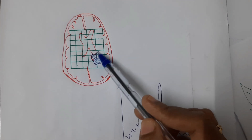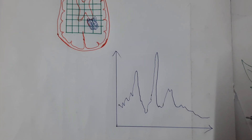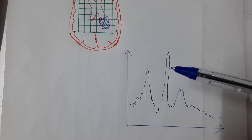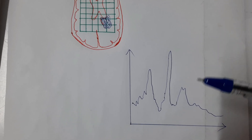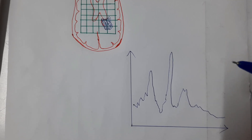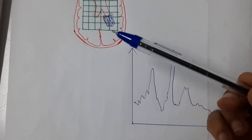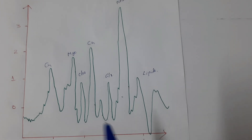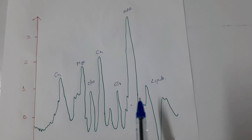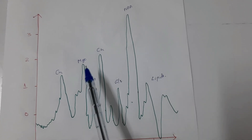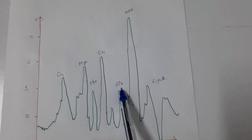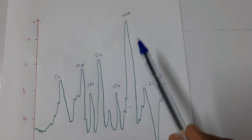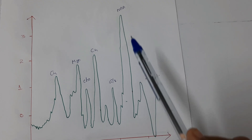When we place the cursor in each of the voxels, we will get a graph. Based on this graph, each of the peaks shows different metabolites of the brain tissue. Certain metabolites will be increased in certain conditions and some metabolites will be decreased in certain pathologies. Based on the concentration, we will be able to identify what type of pathology is present in the brain tissue. In a normal MRS spectrum, you can see different peaks. In a normal brain, the highest peak represents NAA, assigned at 2.02 ppm.